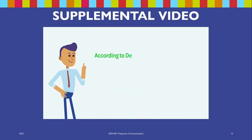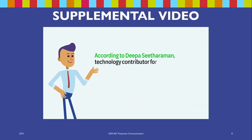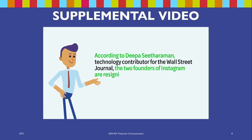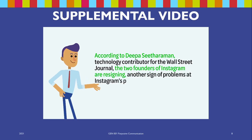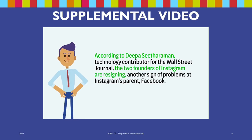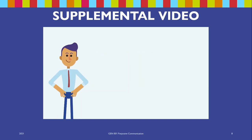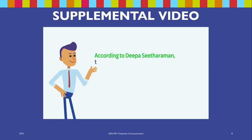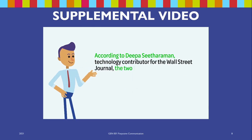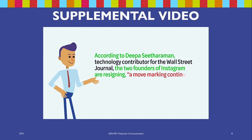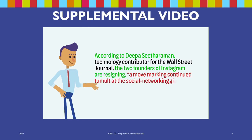'According to Deepa Sitaraman, technology contributor for the Wall Street Journal, the two founders of Instagram are resigning, another sign of problems at Instagram's parent Facebook.' You can also mix some direct quoting and some paraphrasing: 'According to Deepa Sitaraman, technology contributor for the Wall Street Journal, the two founders of Instagram are resigning from Facebook, a move marking continued tumult at the social networking giant.'